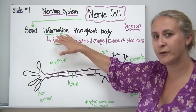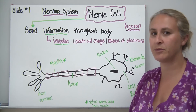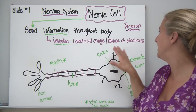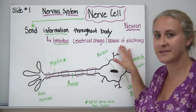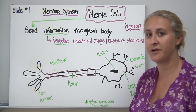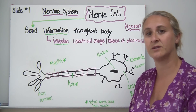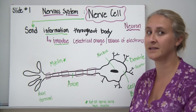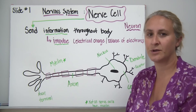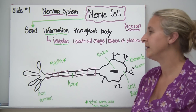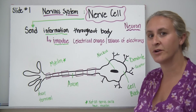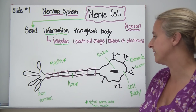That information is transmitted as an impulse, which is an electrical charge — a balance of electrons. The way we send information through our body via nerve cells is as an electrical signal, almost like sending a signal through a phone line or through a computer to a light bulb. In our body, we send signals through our nerve cells as electrical signals.